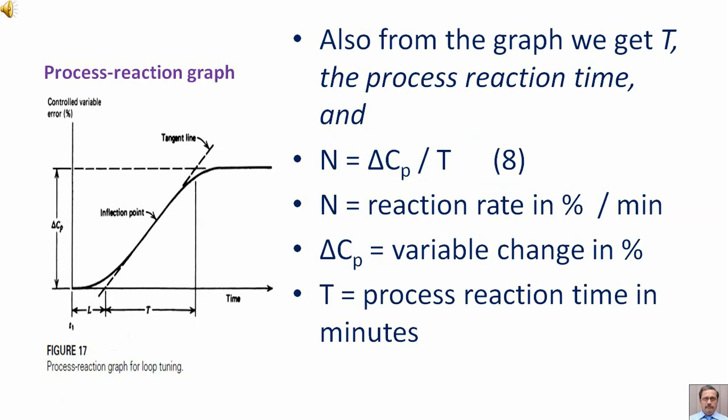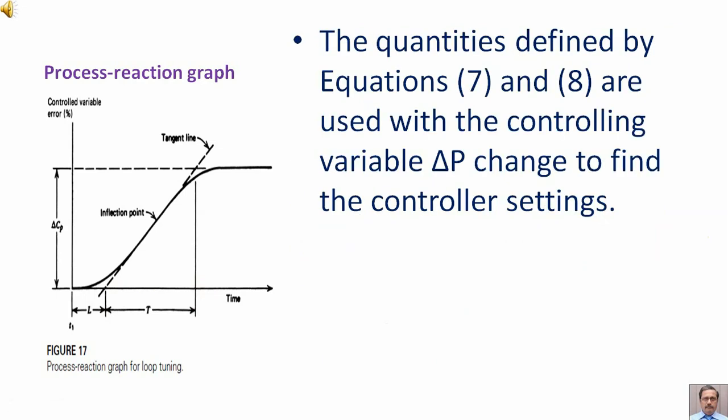Also from the graph we get capital T, the process reaction time, and capital N equal to delta C subscript P divided by capital T. Equation 8: N is the response rate in percent per minute. The quantities defined by equations 7 and 8 are used with the controlling variable delta P change to find the controller settings.